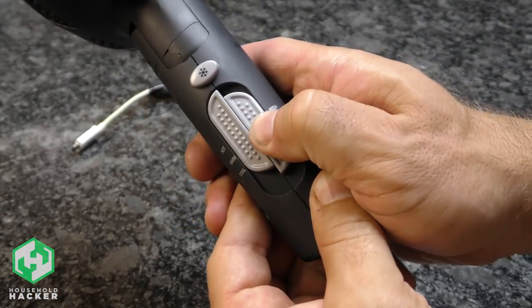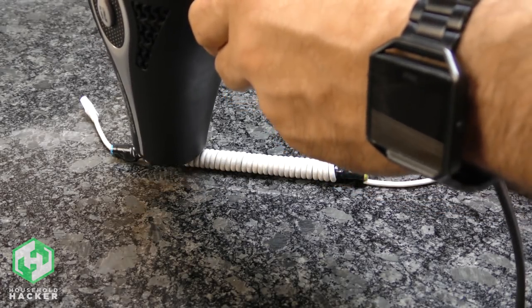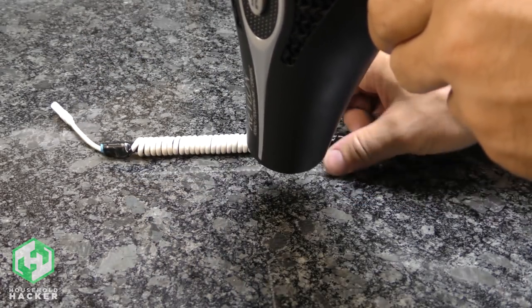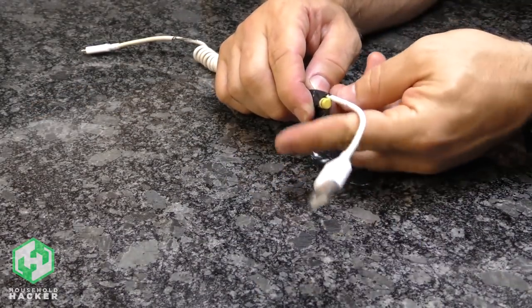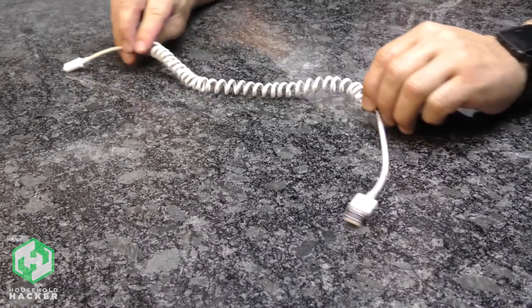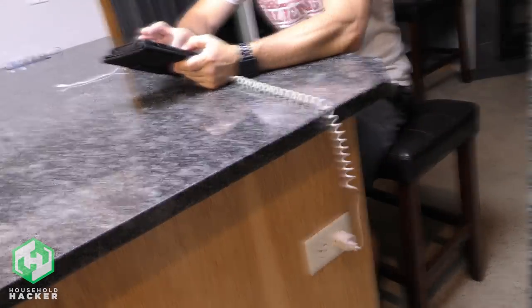Set your blow dryer to high and heat up the plastic until it's warm and moldable. Roll the pencil around to ensure that the heat is applied everywhere possible. Let it cool down for several minutes before carefully removing the tape and the pencil from the middle. You should be left with a spiral cord ready for your convenience.